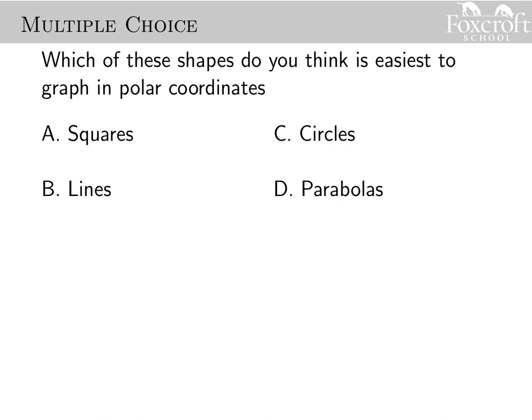And for this multiple choice, which of these shapes do you think is easiest to graph in polar coordinates? So think about the shapes you're seeing as you're going through Desmos or the shapes we've seen in our examples we did in this video. Which of these ones do you think is going to come up the most when you're graphing in polar? Is it going to be squares, circles, lines, or parabolas?